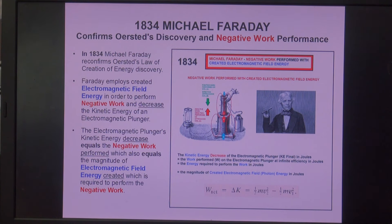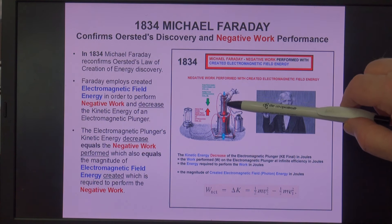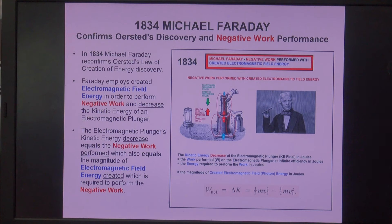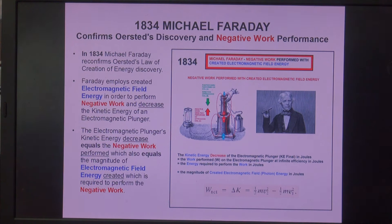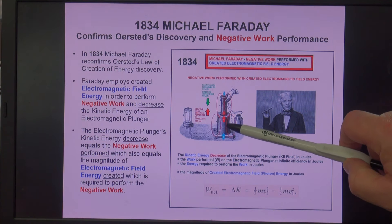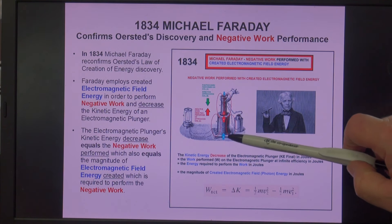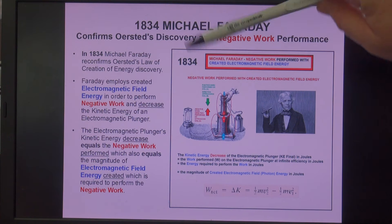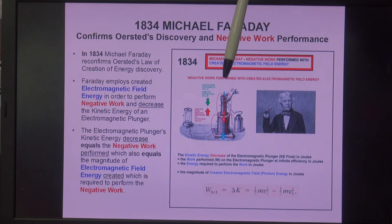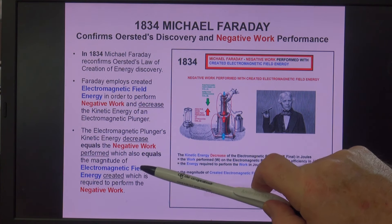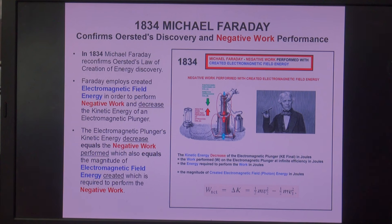In 1834, Faraday replaced his permanent magnet with an electromagnet — an electromagnetic plunger — which he plunged into a generator coil. He again confirmed that negative work was being performed by the created electromagnetic field energy around the generator coil, which resisted and reduced the kinetic energy of the approaching electromagnetic plunger. The kinetic energy decrease of the plunger is equal to the negative work performed on the plunger, which also equals the magnitude of created electromagnetic field energy required to perform the negative work.